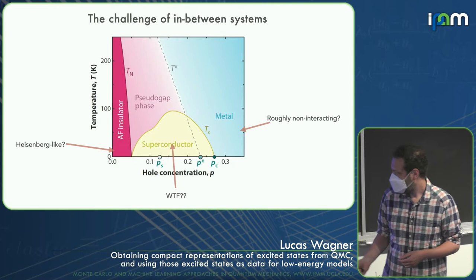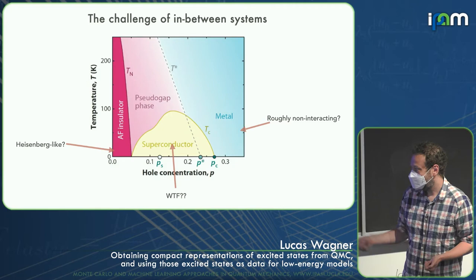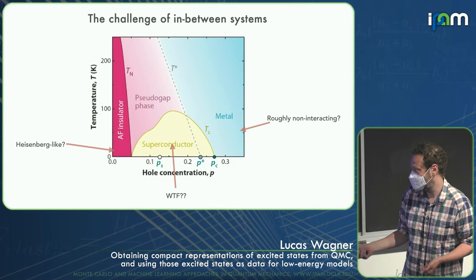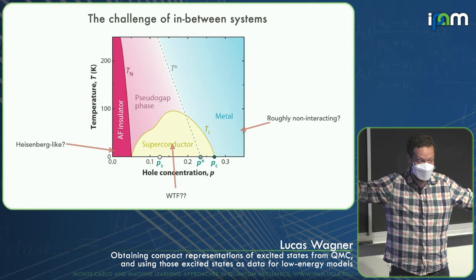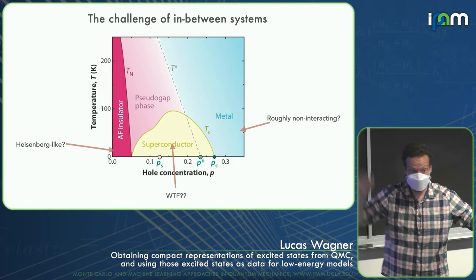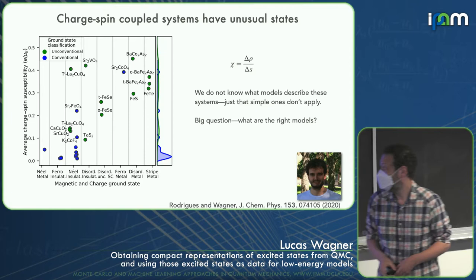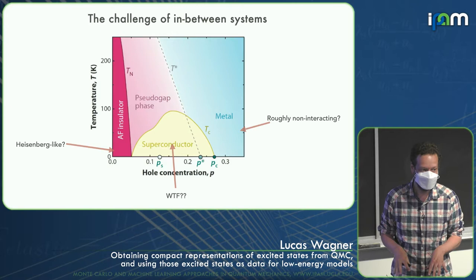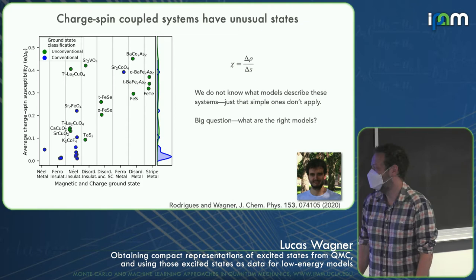Getting superconductivity from first principles on this system — that'll be fun. Because you have to go out to 20, 30, 40 nanometers: the coherence length is that long. So you would need huge unit cells on this very highly correlated system. Even though neural network wave functions look awesome, you need more than 40 electrons to do that. We can't do it with Slater-Jastrow either.